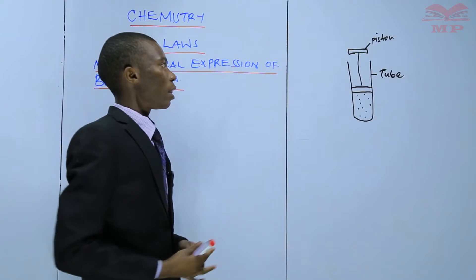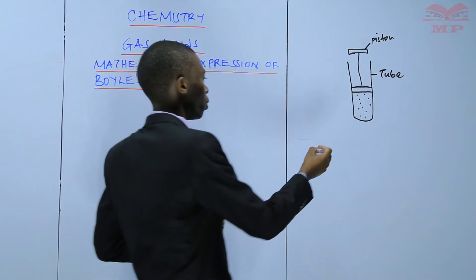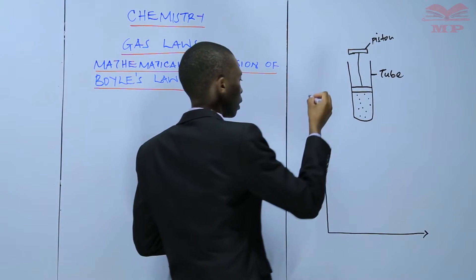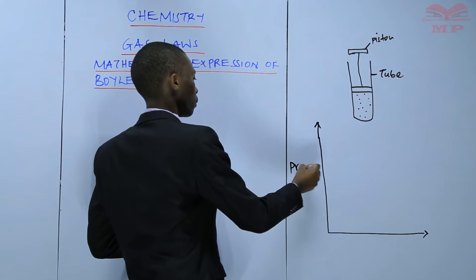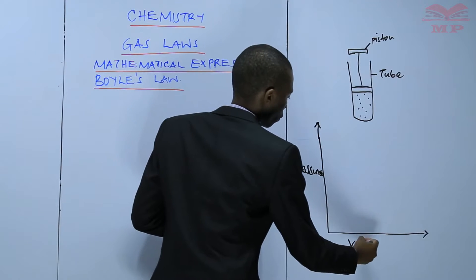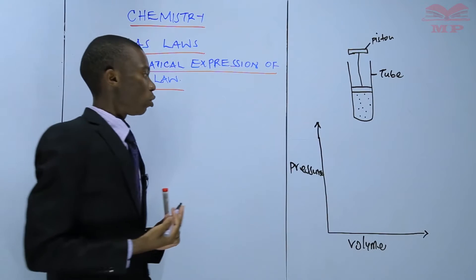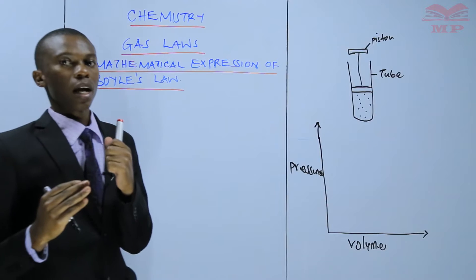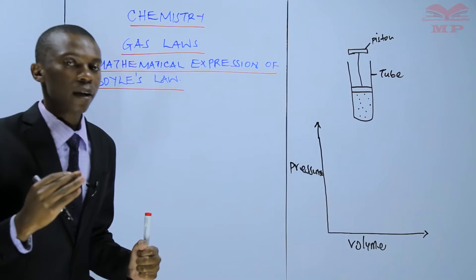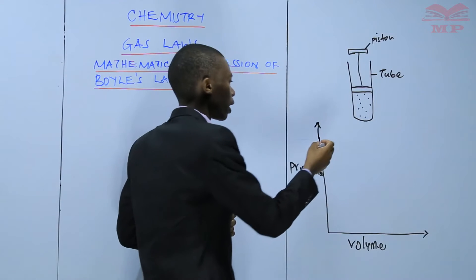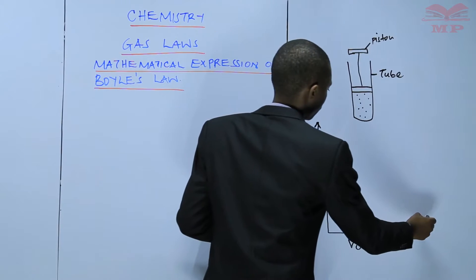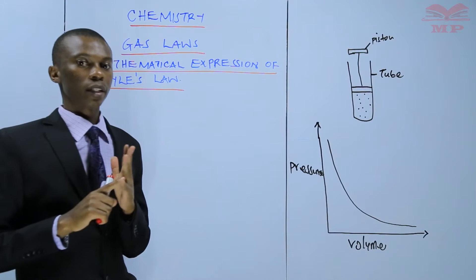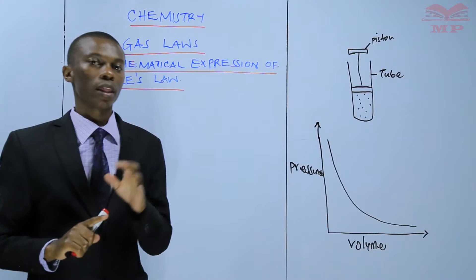You can present Boyle's Law using a curve. I drew a curve — this is a graph of pressure against volume. This graph of pressure against volume shows that any time they are inversely proportional, when pressure increases, volume decreases, and when volume decreases, pressure increases. Therefore the curve looks like this, and one thing to note is that the curve does not touch both the X and the Y axis.